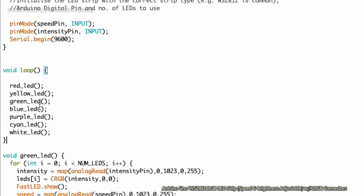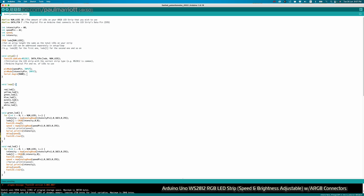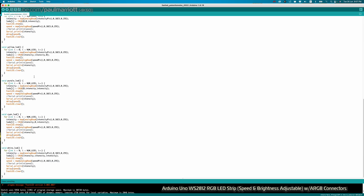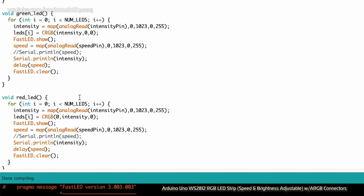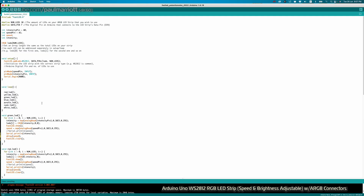In the loop part of the code, I have red, yellow, green, blue, purple, cyan, and white just looping. I've also set it so that turning the potentiometer will increase the intensity and the speed. It reads from the speed pin and the intensity pin — that's A2 and A0 respectively.